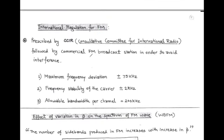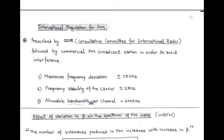Next, we talk about international regulation for frequency modulation. Due to the efficient noise performance of FM wave, it has international regulation prescribed by CCIR — the Consultative Committee for International Radio. Their prescribed regulations are: maximum frequency deviation is ±75 kHz, frequency stability of the carrier is ±2 kHz, and allowable bandwidth per channel should be 200 kHz. In order to avoid interference, these regulations must be followed by all commercial FM broadcast stations. So CCIR is the regulating authority for frequency modulation.